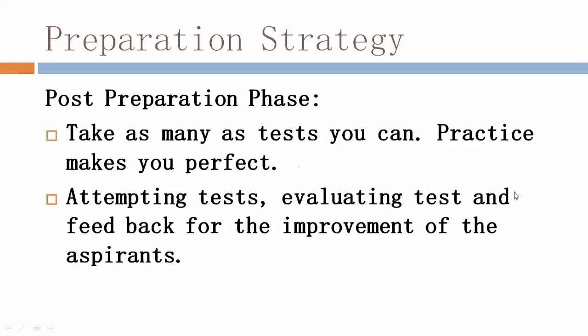A post-preparation phase is where majority of NET aspirants commit a mistake. People keep studying until the examination, but that is not the right procedure. Your preparation should be 50% and practice should be 50%. Before the real examination, you should attempt at least five question papers each of paper one and paper two. This is a blunder — people keep studying till the last date, but this is not a descriptive examination, so that technique will not work.